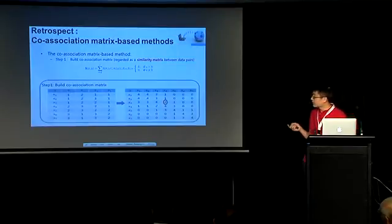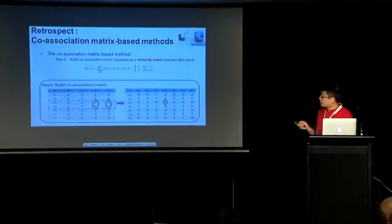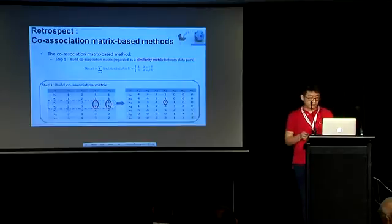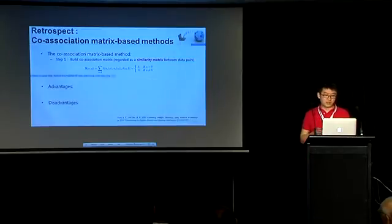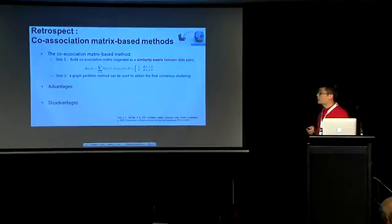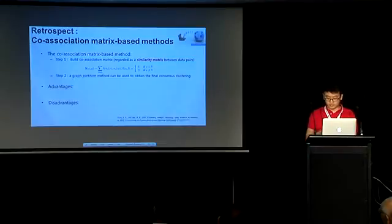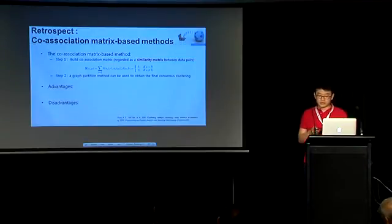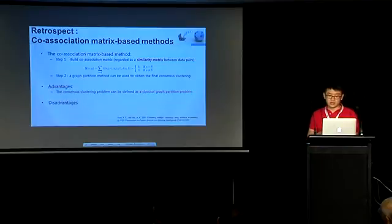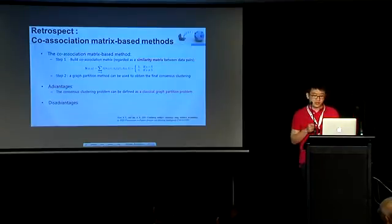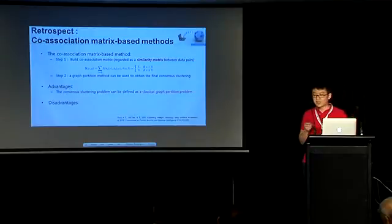For example, the left-hand side table shows some basic partitions for the data, and the right-hand side table is the corresponding co-association matrix. Here, the entry two means that the third and the first observations have been assigned to the same cluster twice. And the second step for the co-association matrix-based method is to employ a graph-partition method to obtain the final consensus clusterings. As we can see, the co-association matrix can be regarded as a similarity matrix between data pairs.